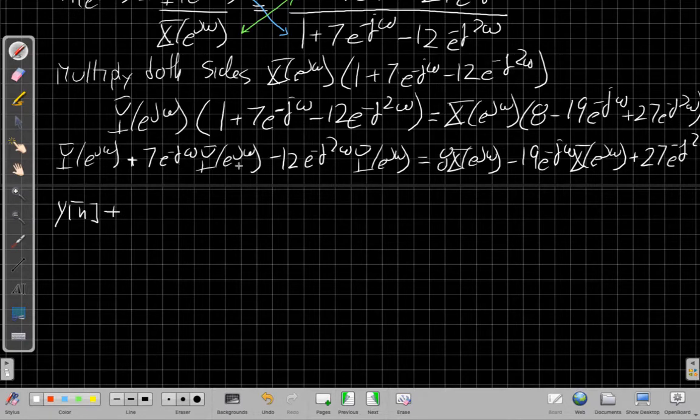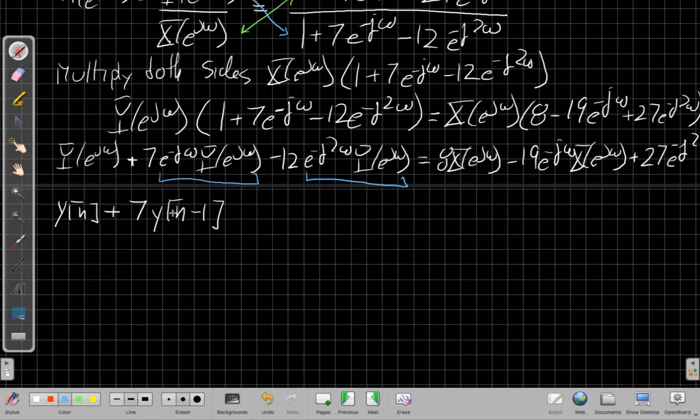Then this term, I say, well, this piece here is the delay property, right? This is the Fourier transform of Y of N minus 1, and then it's been scaled by 7. So the next term is I get 7 times Y of N minus 1 because I've used this delay property. Similarly, this is a shift by 2 property, right? This is a delay by 2 minus 12 times it with linearity.